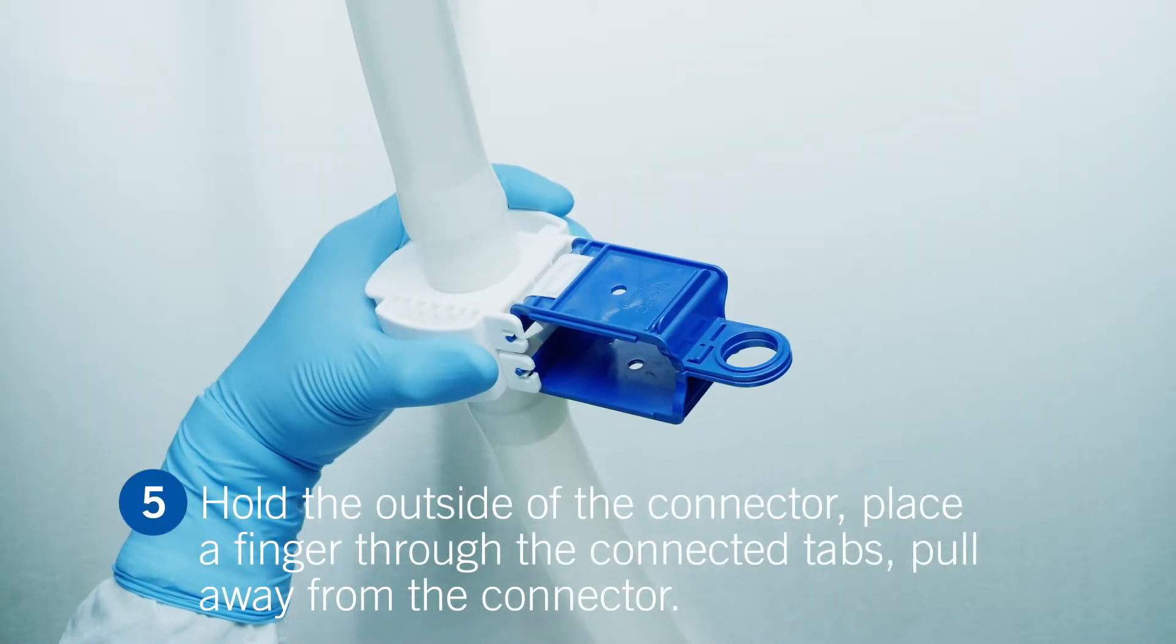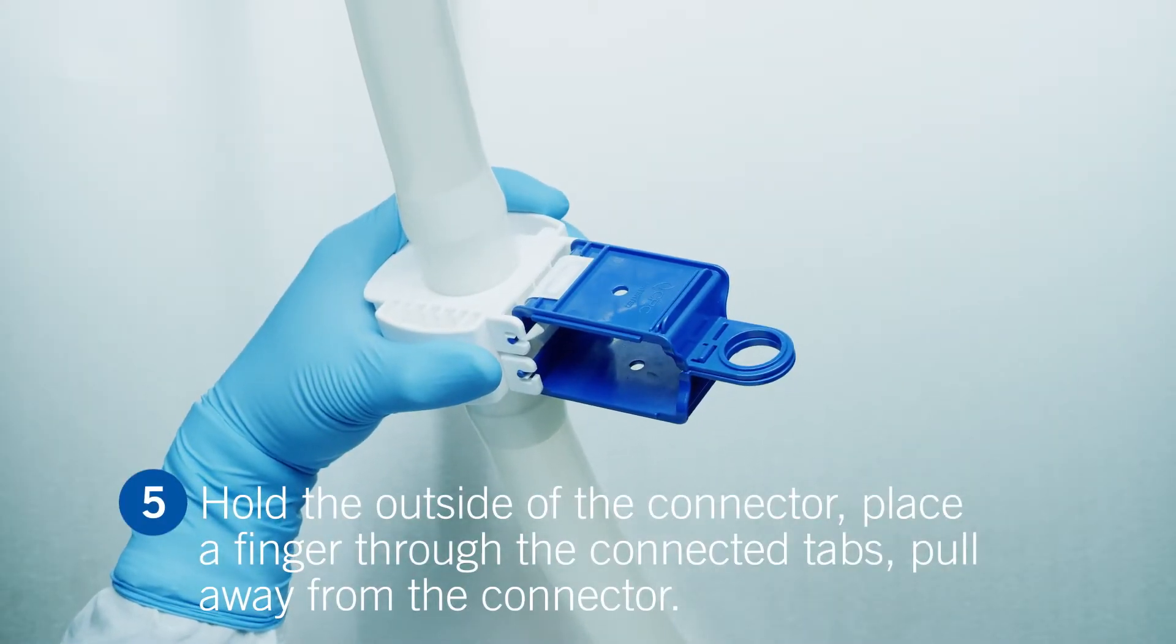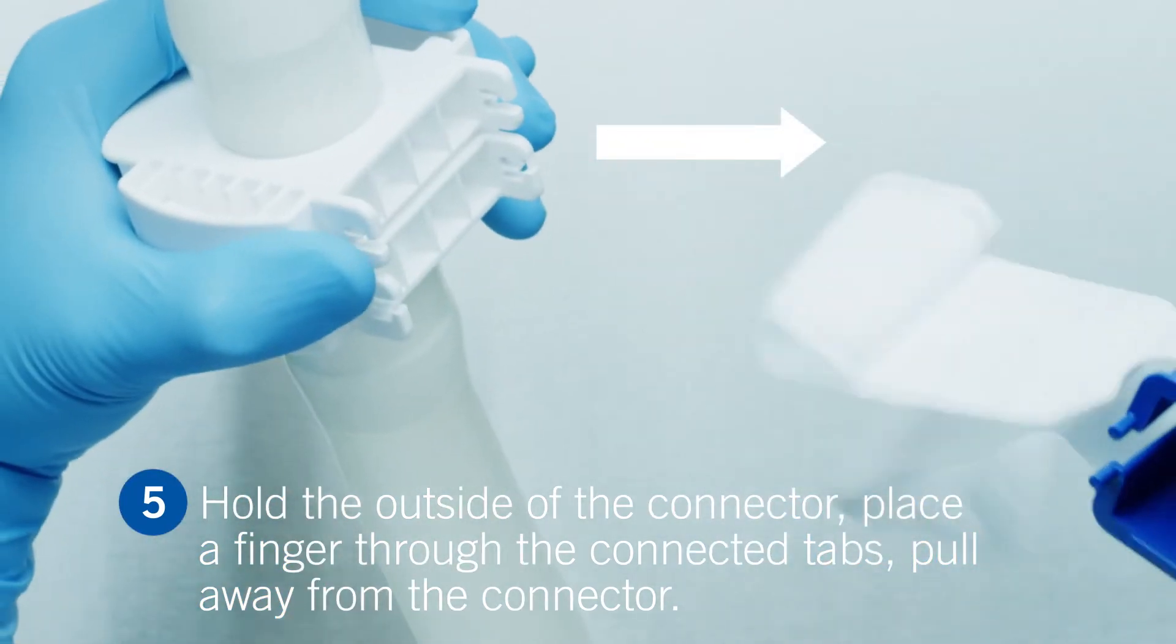To remove the membranes, hold the outside of the connector and place a finger into the connected tabs and pull directly away from the connector.